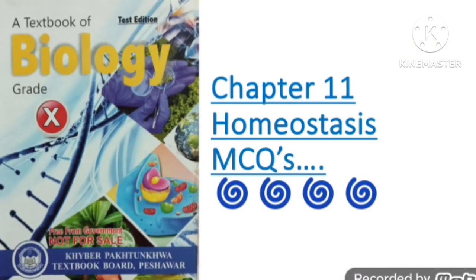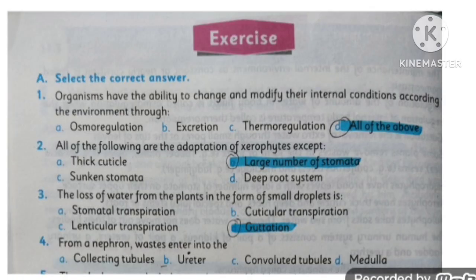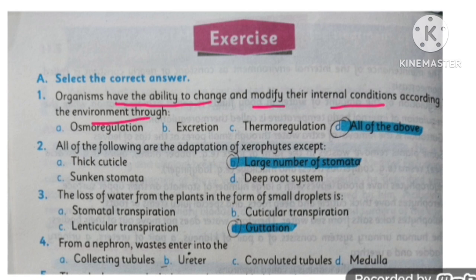Assalamu alaikum dear students. Today I am going to discuss MCQs of chapter number 11, which is homeostasis. MCQ number one: organisms have the ability to change and modify their internal conditions according to the environment through osmoregulation, excretion, and thermoregulation. All of these are the processes through which the organism can modify their internal condition according to their environment.